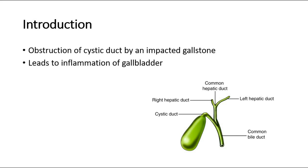This is a brief anatomy of the gallbladder. This is the gallbladder, and this is the cystic duct. If you look up here, this is the right hepatic duct and left hepatic duct connecting to form the common hepatic duct. The cystic duct from the gallbladder will then connect with the common hepatic duct to form the common bile duct.